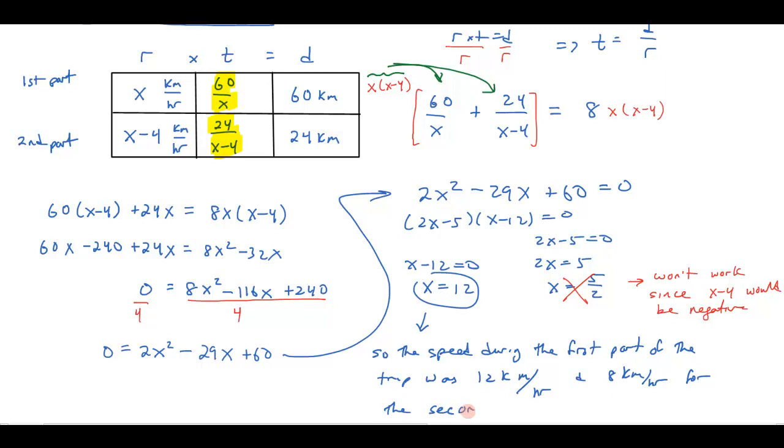Now, let's see if that works. So I've stated my answer. Let's just double check it. If he was going 12 kilometers per hour for the first part of the trip and he went 60 kilometers, well, that means he would have gone five hours. And then if he went four kilometers per hour less, so that'd make eight kilometers per hour for the second part of the trip. And it would take him three hours to go 24 kilometers at eight kilometers per hour. And notice that sure enough, that does add up to give me the eight hours total time for the trip.